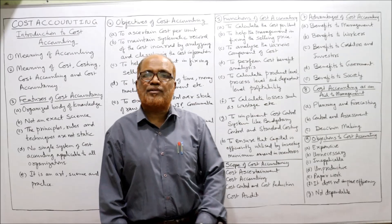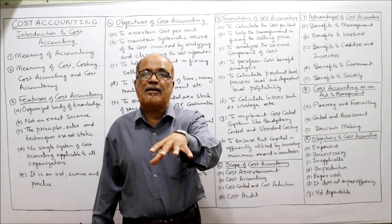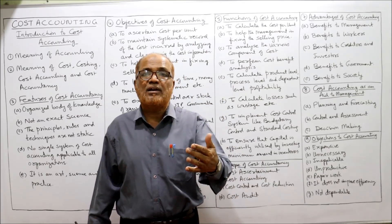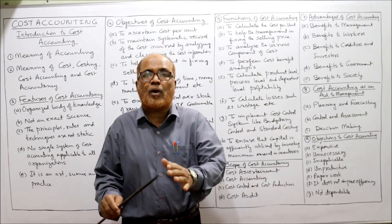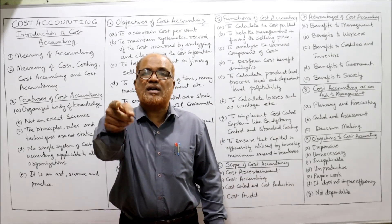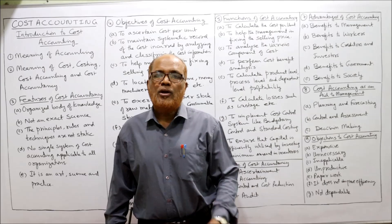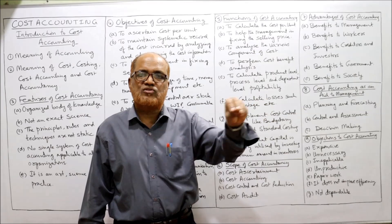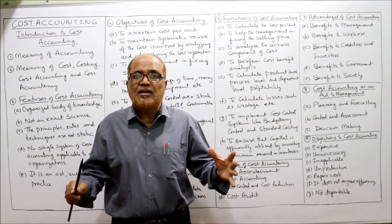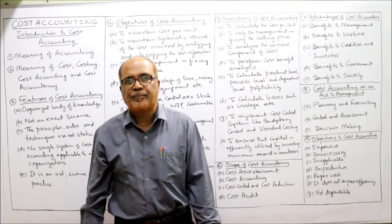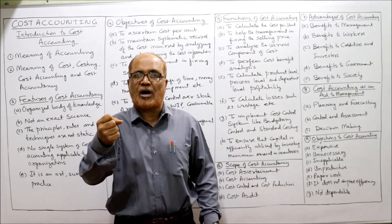Benefits to workers: workers in organizations also benefit from cost accounting. A proper incentive scheme is applied in which workers get a share — efficient workers are honoured while inefficient workers are penalized. By keeping cost accounting systems, workers' earnings increase and they get more bonuses and incentives. Benefits to creditors and investors: they will assess the company's solvency, and cost accounting gives them assurance that the company is financially sound and solvent.